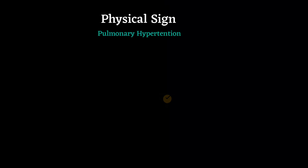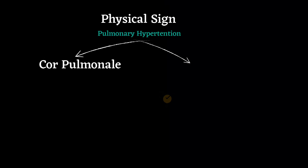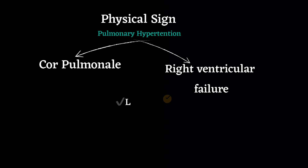Pulmonary hypertension, if severe enough, can cause cor pulmonale and right ventricular failure due to COPD. In this case, there may be leg edema, elevated jugular venous pressure, and a loud P2.